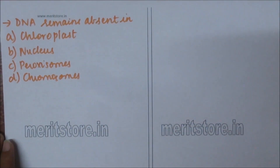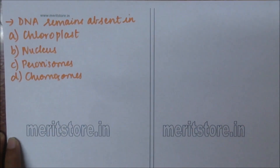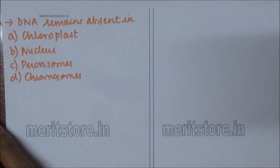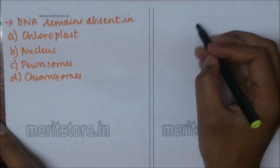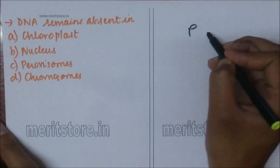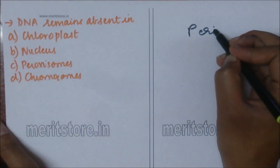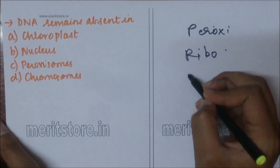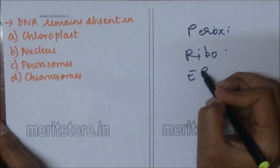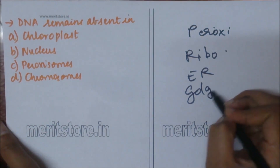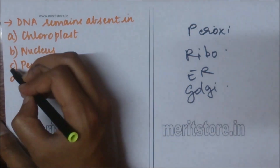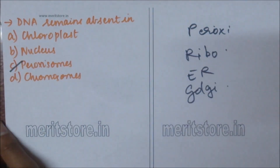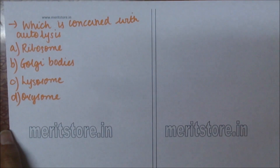DNA remains absent in: A) chloroplast, B) nucleus, C) peroxisomes, D) chromosomes. There are some cell organelles in which DNA is not present — they are peroxisomes, ribosomes, endoplasmic reticulum, and Golgi bodies. So option C is the correct answer.